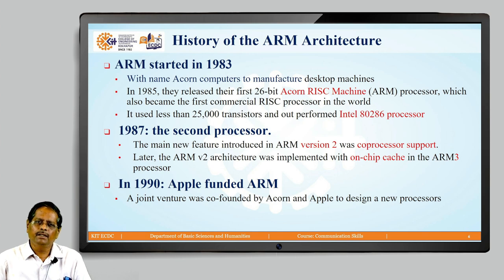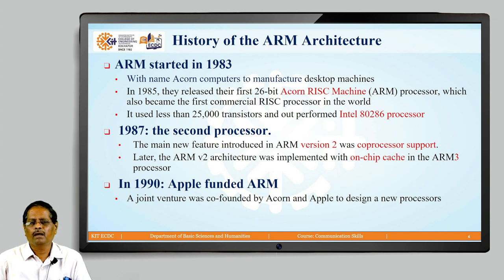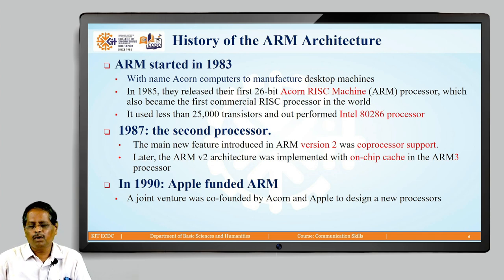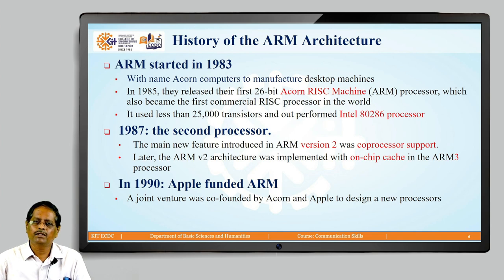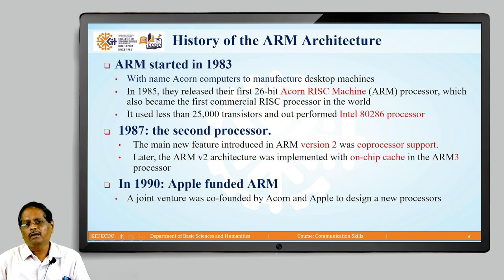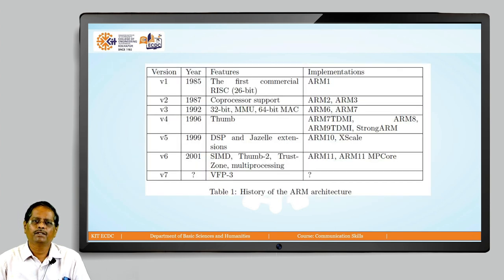In 1990, ARM was funded by Apple — it was a joint venture between Acorn and Apple. At that time, Apple needed a design for iPods and video and MP3 players and required a very powerful processor, which was available with Acorn. They joined hands and started producing ARM processors jointly. Thereafter the name was no longer Acorn but Advanced RISC Machine.